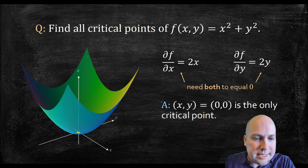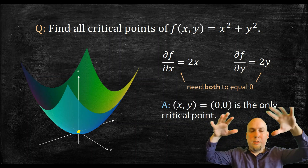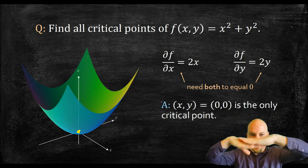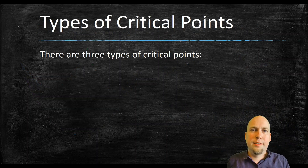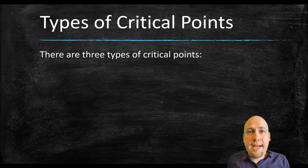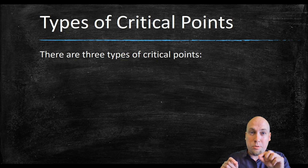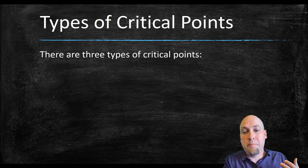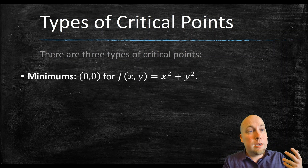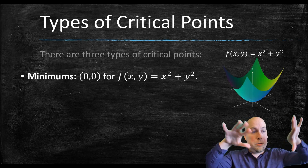Geometrically, that means on the graph of this function there's only one spot where the graph is flat or horizontal. If you plot this function it looks like a bowl — it's called a paraboloid. Down at the very tippy bottom of the bowl, that's where the critical point is. So critical points can be minimums, like this paraboloid bowl example.